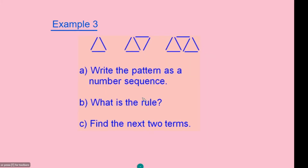Now we have a third question, similar to the previous one, but this time with a triangular kind of shape. The question asks to write the pattern as a number sequence. The first pattern has 3 sticks, so the sequence starts at 3. The next pattern has 5 sticks, and the one after that has 7 sticks. So the sequence is 3, 5, 7.